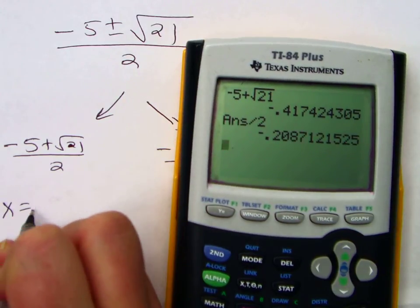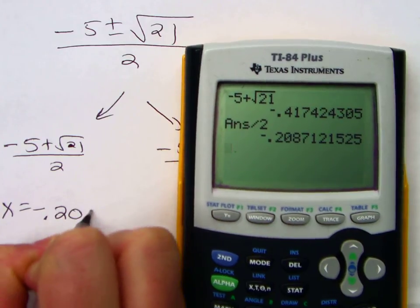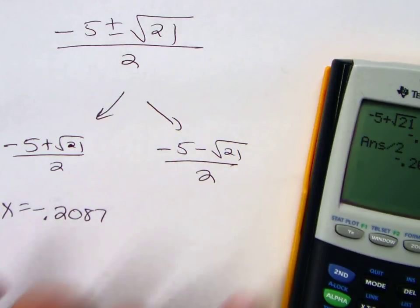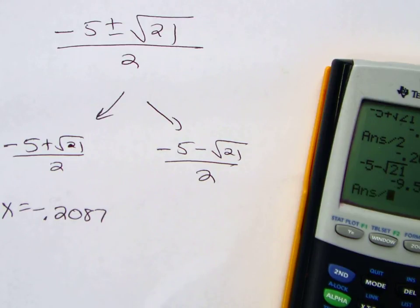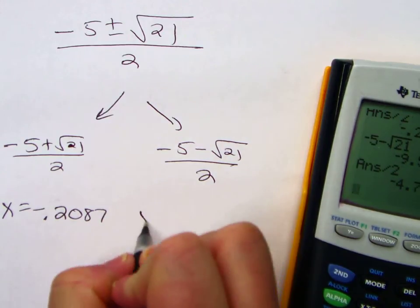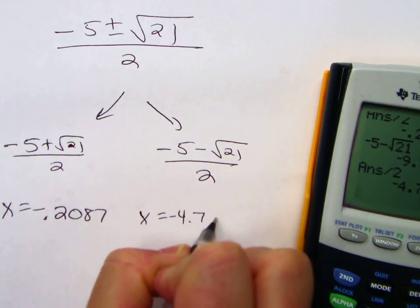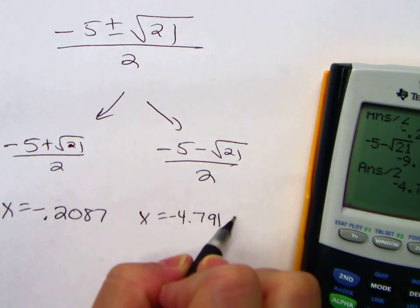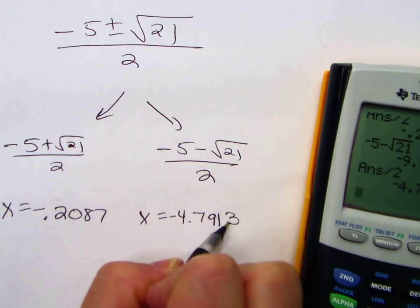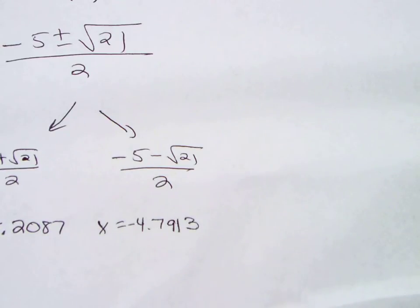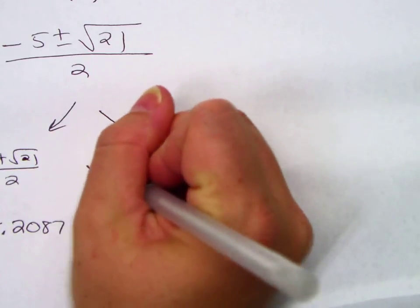X equals negative 0.2087. And then I'm going to hit a minus, divided by 2. X equals negative 4.7913.